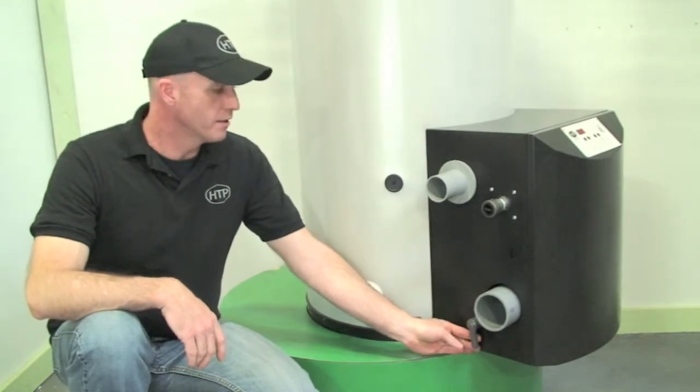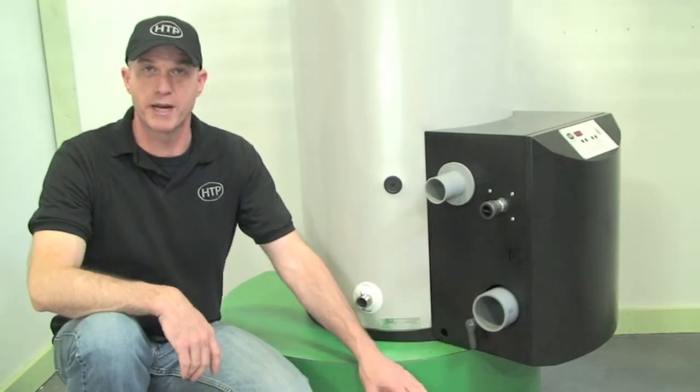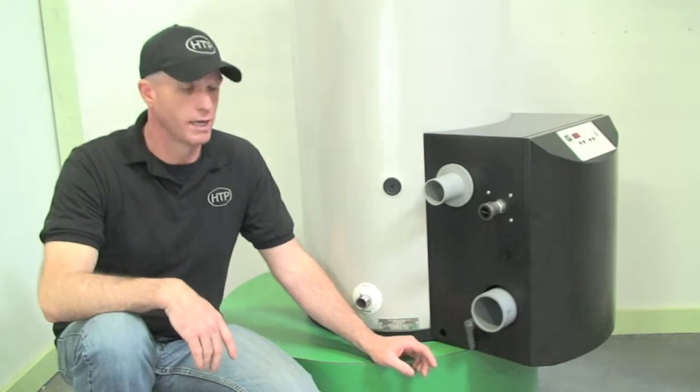This is a barbed fitting. In here we would hook a tube or nylon hose and either go to a floor drain or to a condensate pump where we will pump the condensate to an external wall and outside.